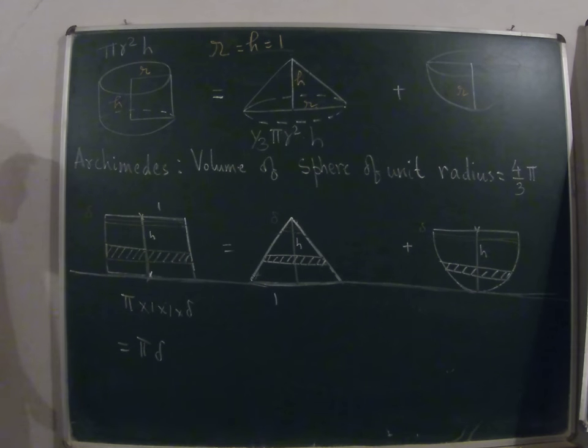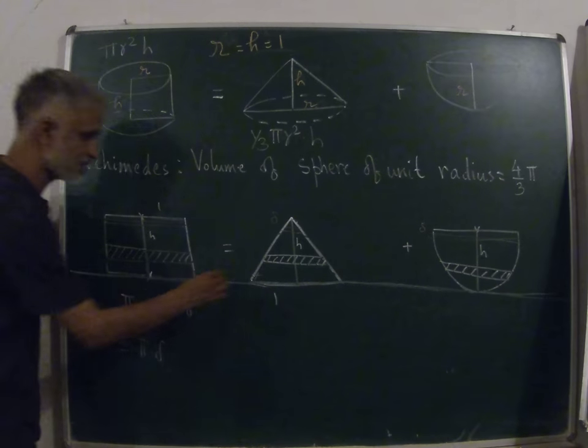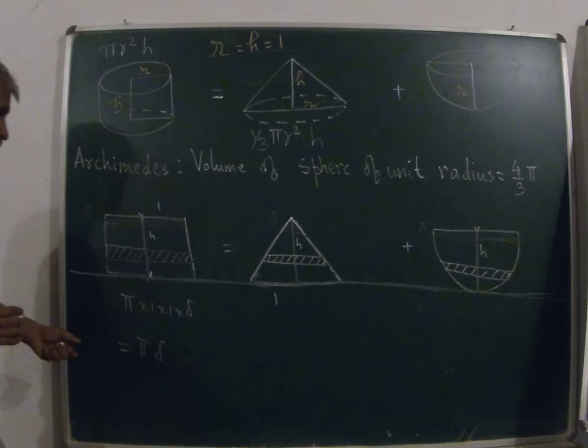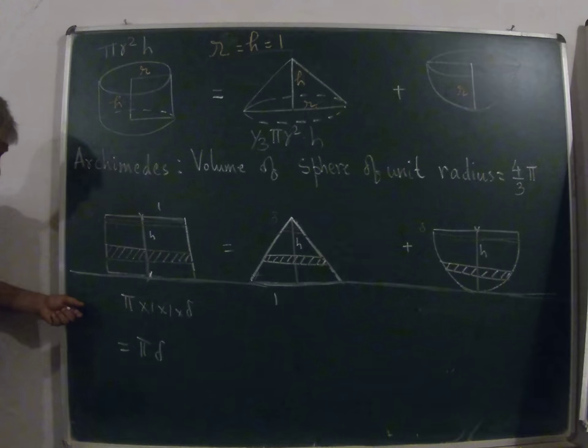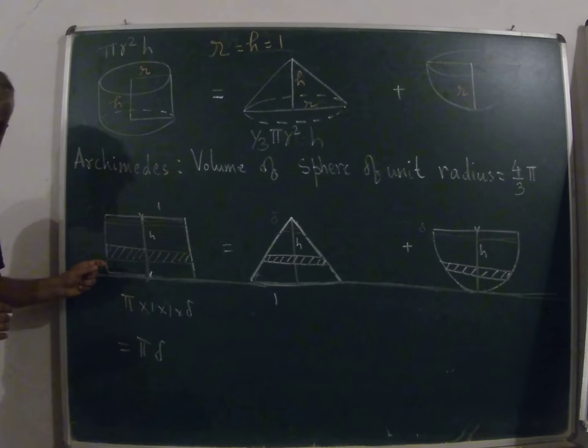These are disks, so the volume of this disk is going to be, the radius is one and the thickness is delta, so πr² that is one into one into delta, that is equal to π delta. So this is the volume of this disk. This disk, keep in mind that it's a thin disk and there are many such disks.